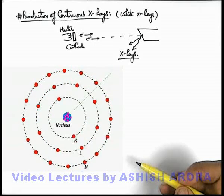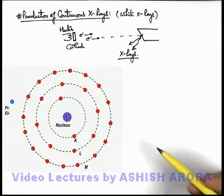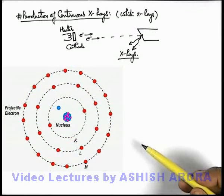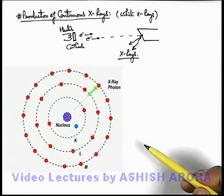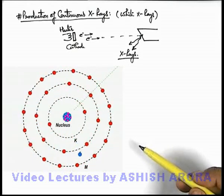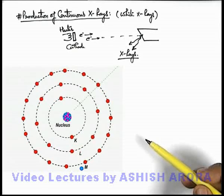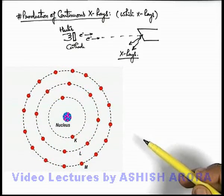and if it does not collide with any of the orbiting electron and when it comes close to the nucleus, it'll experience a very high electrostatic attraction by the nucleus. And due to a very high acceleration the electron will lose electromagnetic radiation in the surrounding which are actually the x-rays and this is the way how these x-rays are produced.